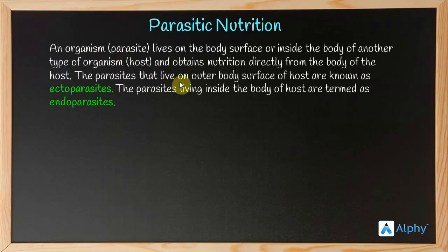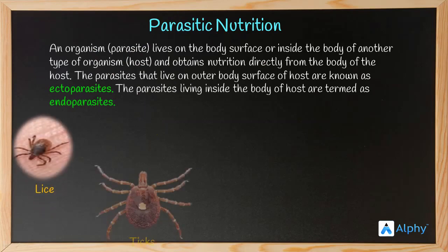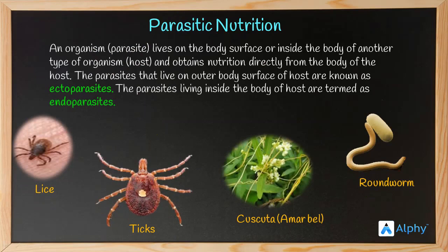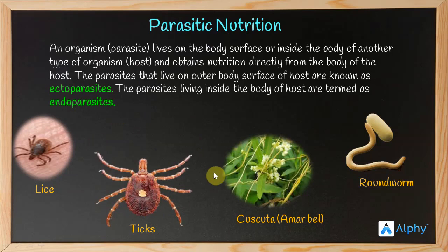The organism that directly feeds on another organism is known as a parasite, and this mode of nutrition is called parasitic nutrition. The organism from which nutrition is derived is known as the host. Examples include lice, ticks, cuscuta, and roundworm. Cuscuta is also popularly known as amarbel. Lice, ticks, and cuscuta are ectoparasites since they are present outside the body of the host.